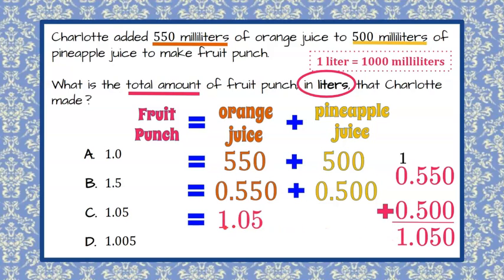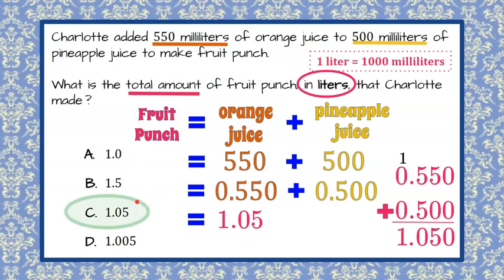Together, we have 1.050 liters of fruit punch. The trailing zero is an insignificant figure, so we don't need it — the answer is 1.05 liters. You could also have added 550 and 500 first to get 1,050, then converted that to liters. Both methods work. Looking at our answer choices, the answer is choice C.